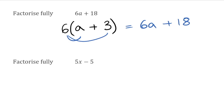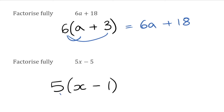Moving on to the next question, we have 5x minus 5. In terms of the numbers, I've got 5 on the left and 5 on the right, so we've got a common factor of 5. In terms of letters, we only have an x on the left, nothing on the right, so we're not going to include that on the outside. Opening the bracket: we need 5x, which is 5 multiplied by x, then minus, and we need 5, which is 5 multiplied by 1, so I put a 1 there. Checking by expanding: 5 times x is 5x, and 5 times negative 1 is negative 5 — back to where we started.